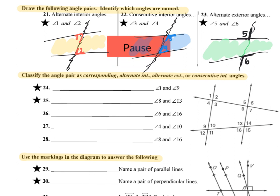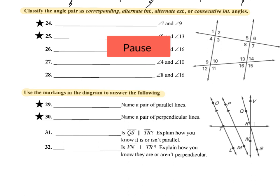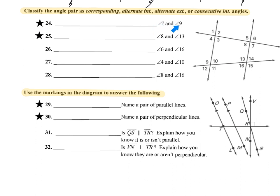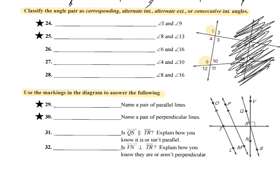Now pause and try these next questions. When we look at classifying angle pairs, they ask us to classify as corresponding, alternate interior, alternate exterior, or consecutive interior angles. For question 24, they ask me to look at angles 1 and 9. I find angle 1 and angle 9, then cover up the other lines and just focus on those two angles.